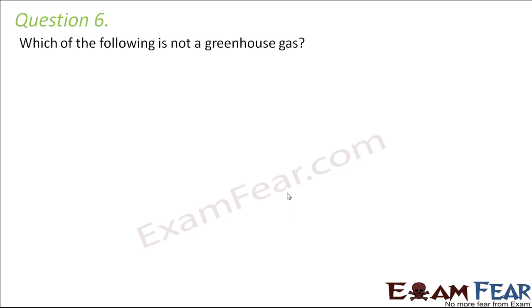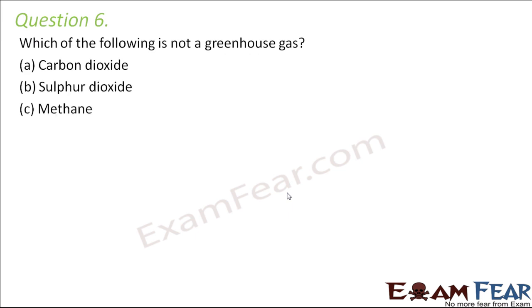Question number 6: Which of the following is not a greenhouse gas? — carbon dioxide, sulfur dioxide, methane, or nitrogen. Carbon dioxide and methane are the most important greenhouse gases. Even sulfur dioxide acts as a greenhouse gas, as it is capable of absorbing infrared radiation. But nitrogen is not a greenhouse gas, so nitrogen is the correct answer.